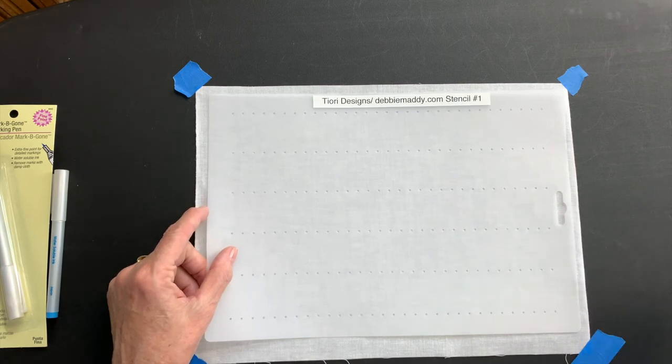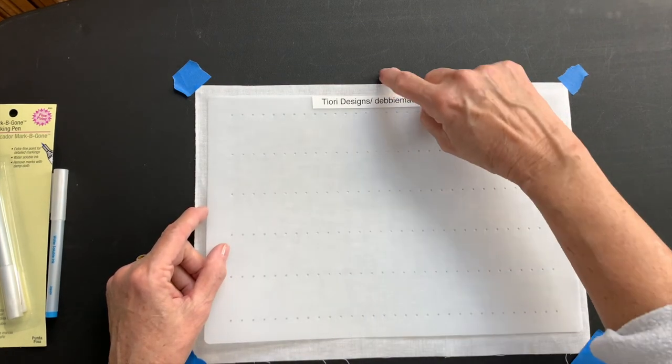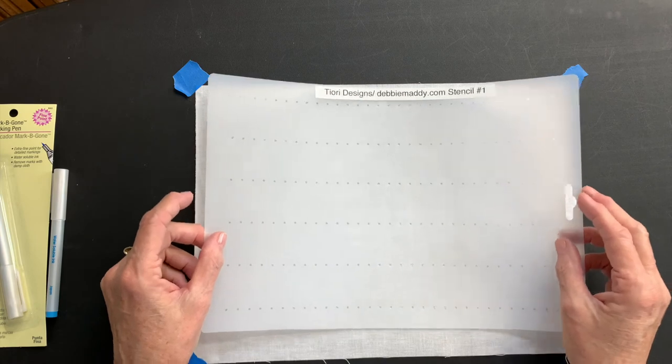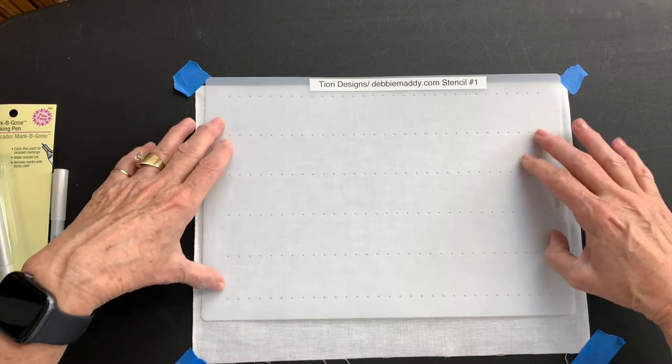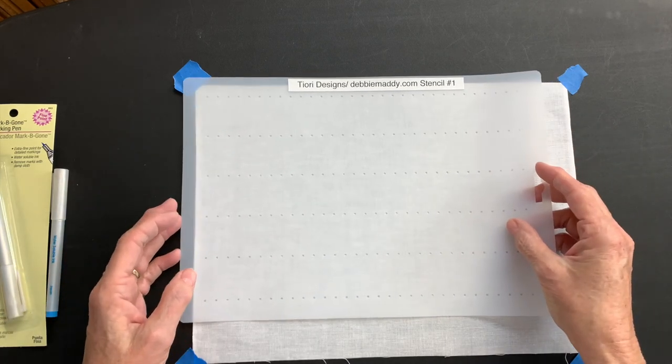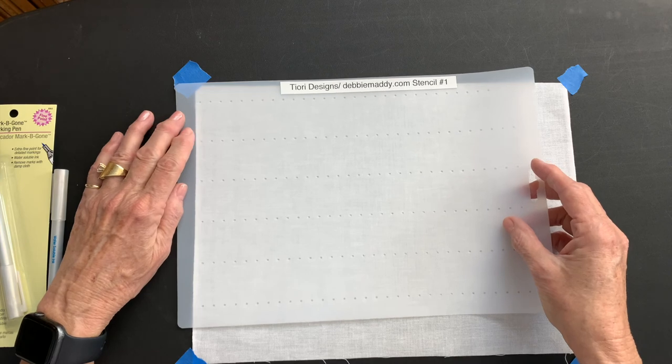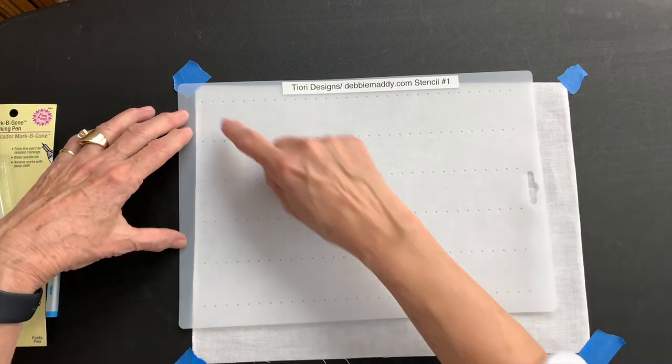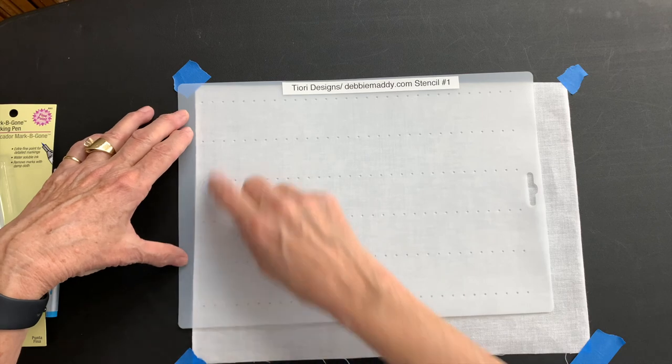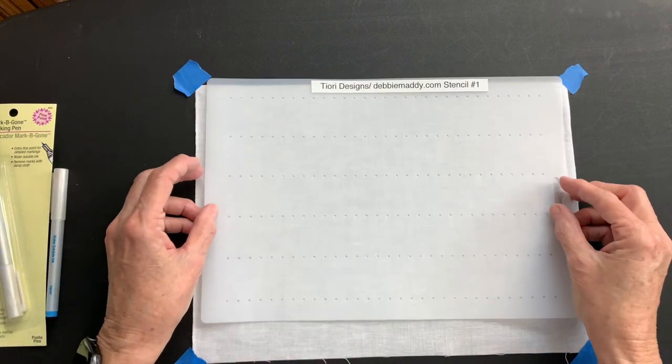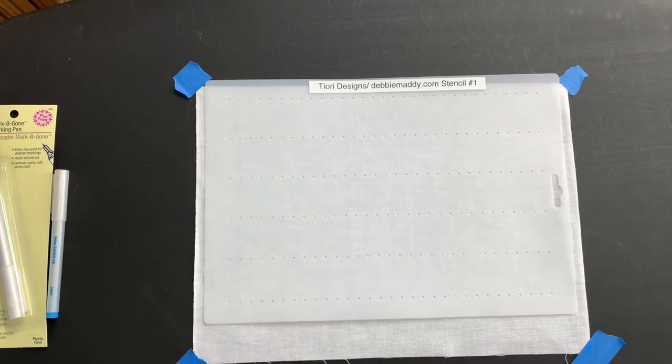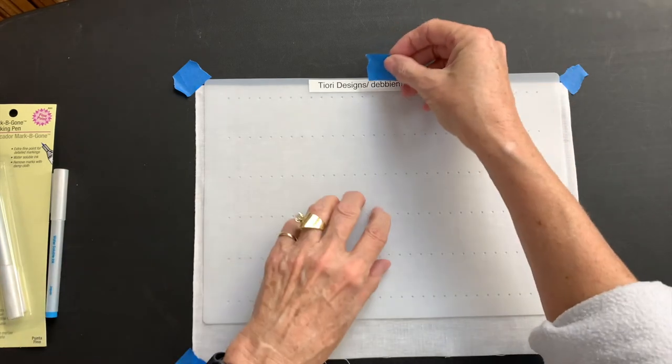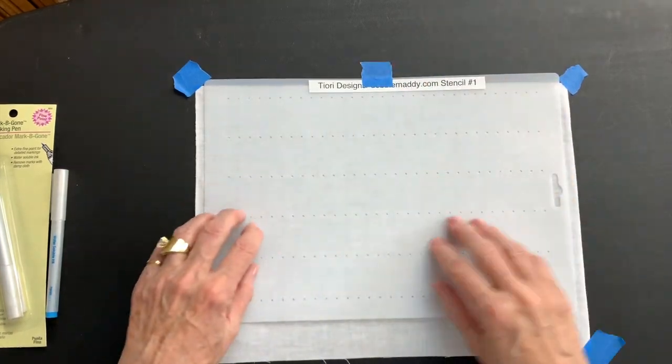Now, ideally when you're doing pleats and you want everything to be even, you would find the center of your fabric and you would find the center point of your template and you put your template on top of that fabric. Another way you can do it is to move the stencil over where you're just inside the dots are just inside the selvage. So today, I'm just going to put it in the middle and then I also use a piece of painter's tape to tape down the stencil so it doesn't move.